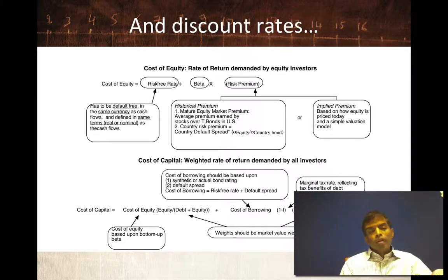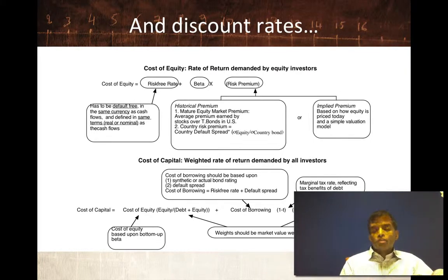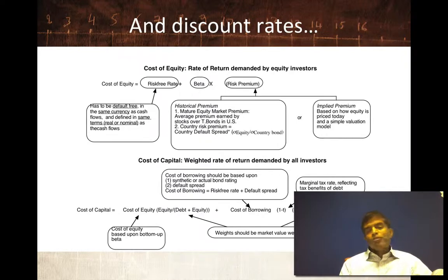For the cost of equity, start with the risk-free rate, then ask: if I were investing in the average-risk stock, what risk premium would I demand? That's the equity risk premium. Some estimate it historically — over the last 86 years, U.S. stocks have earned about 4–5% more than T-bonds. An alternative is the implied equity risk premium: take today's stock price levels and back out what premium is priced in. In March 2013, that number was about 5.5–6%.